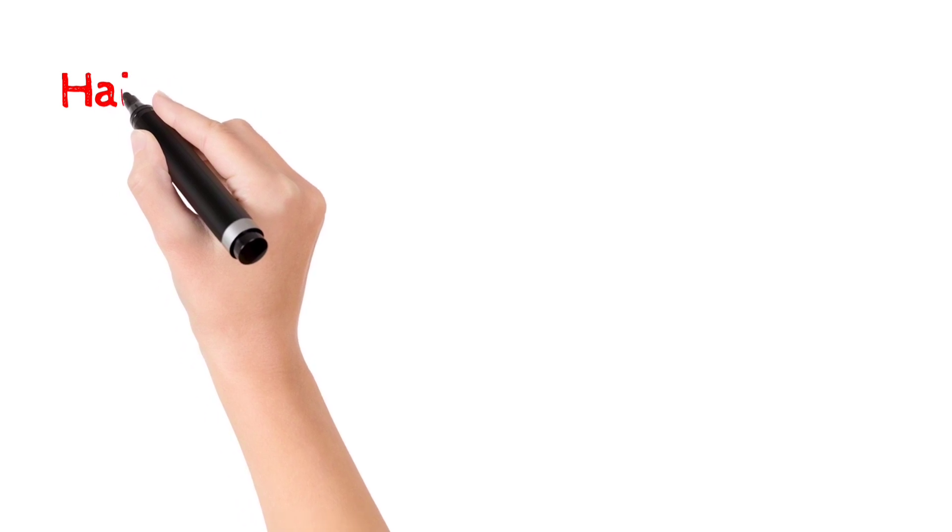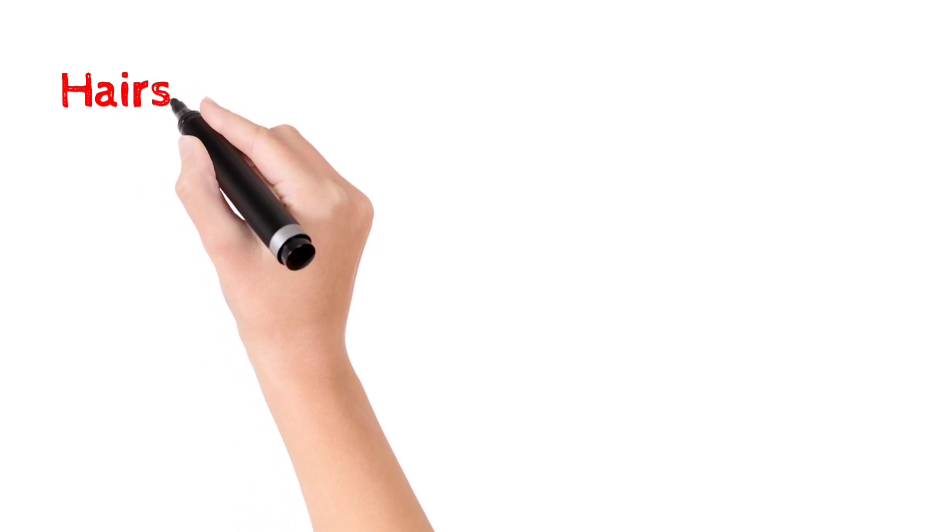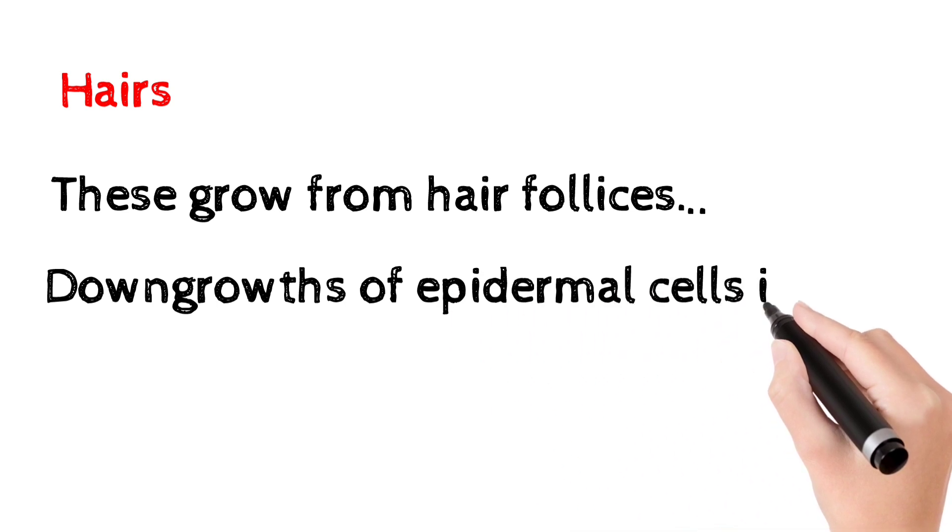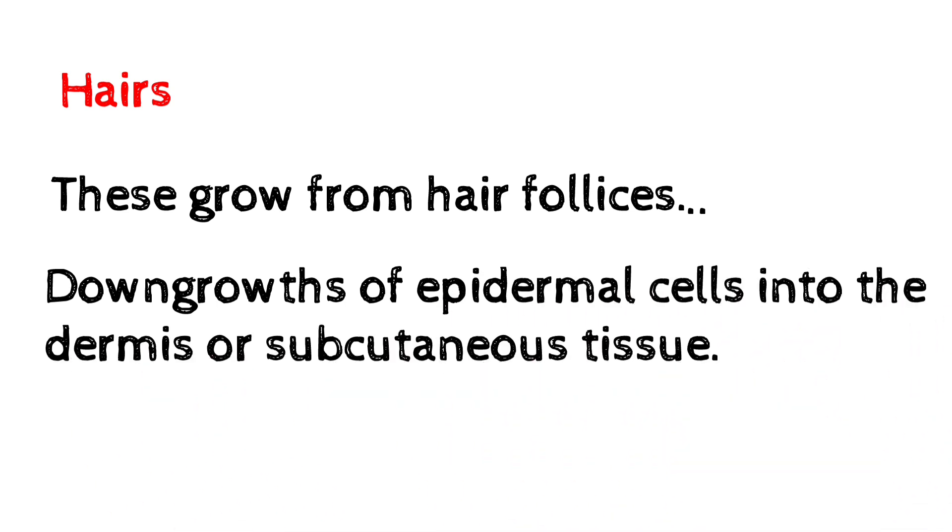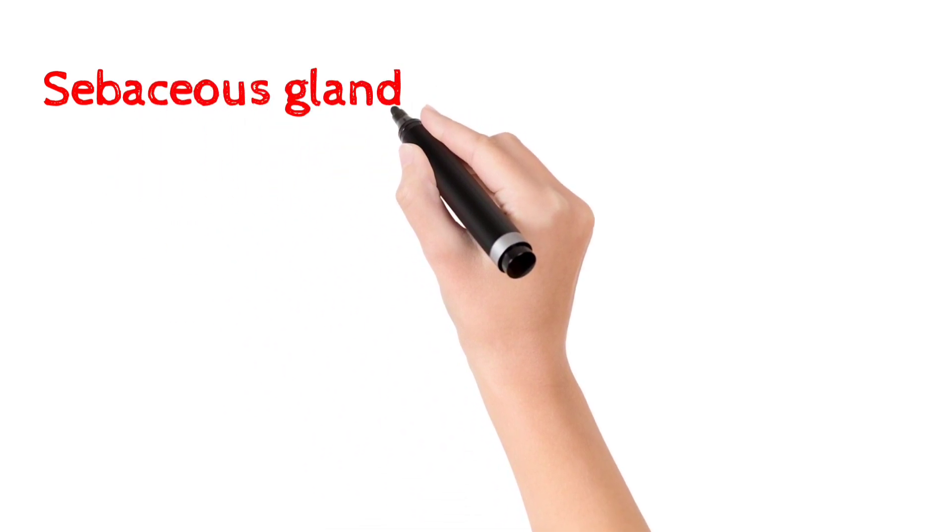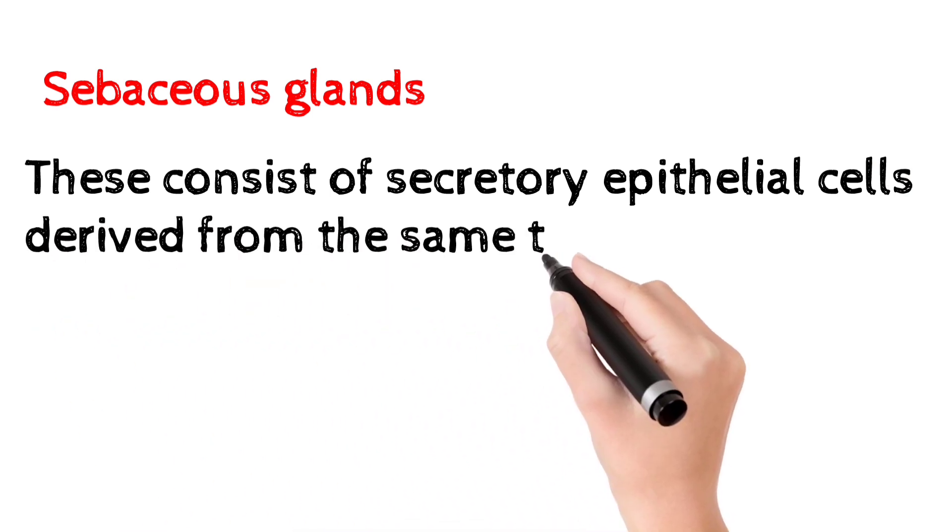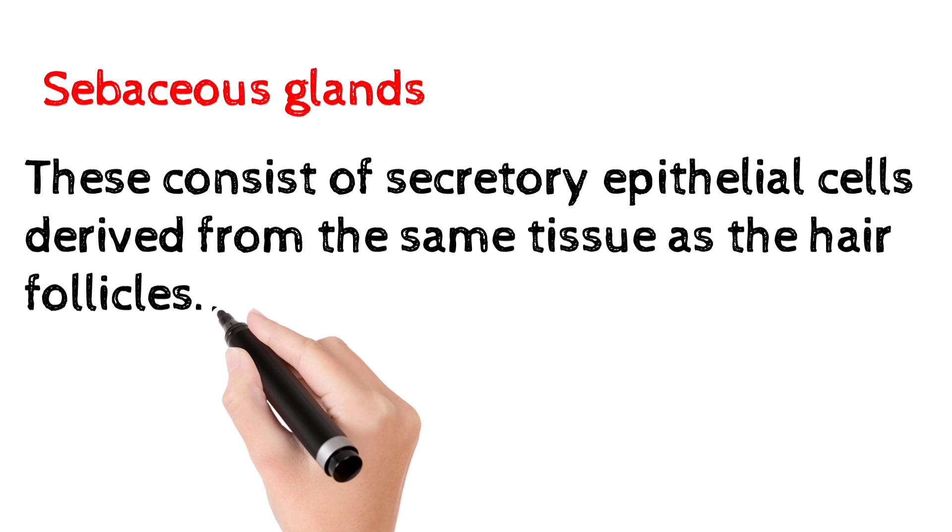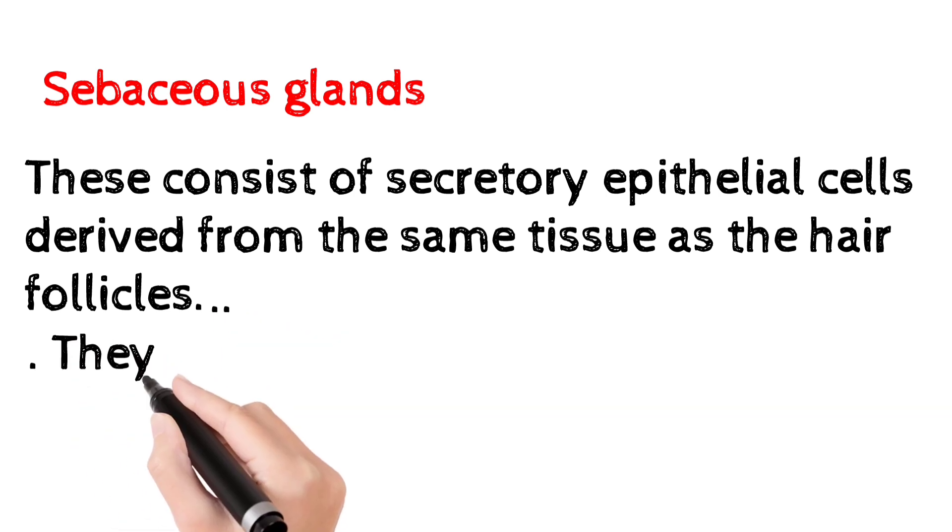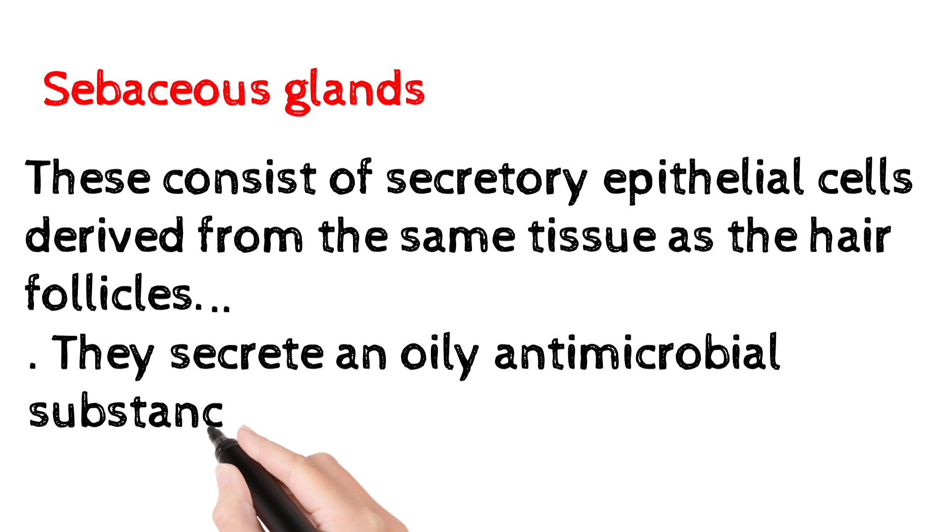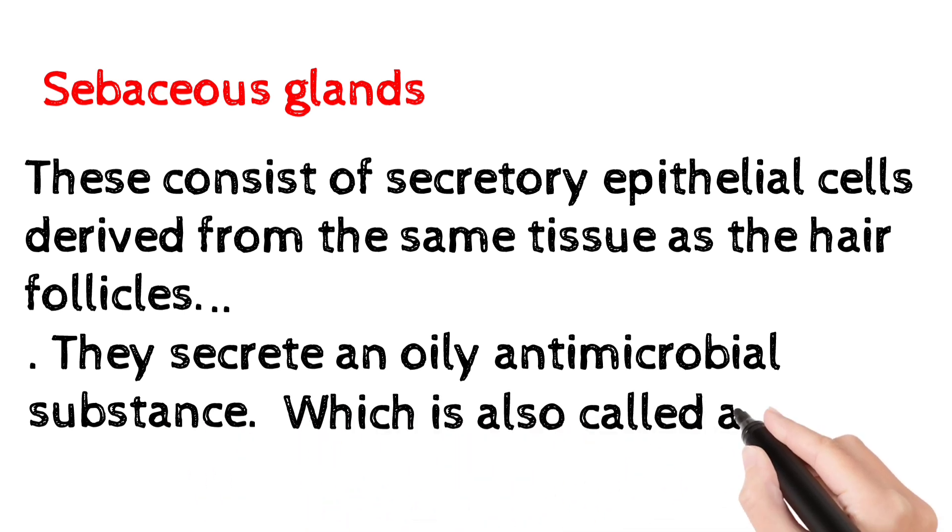Hair grows through hair follicles that extend into the dermis or subcutaneous tissue. The sebaceous glands are formed from secretory epithelial cells. These glands release an oily substance called sebum, which is antimicrobial in nature.